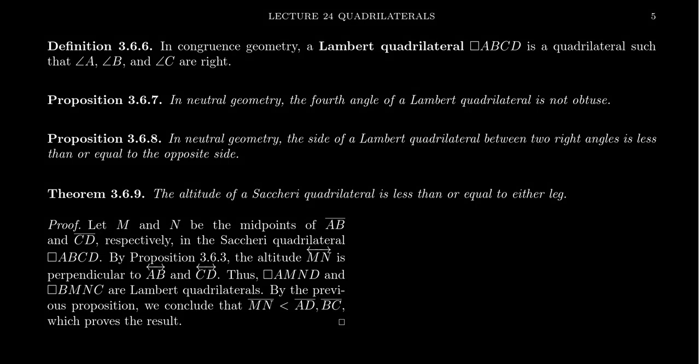In the previous video for lecture 24, we introduced the notion of a Saccheri quadrilateral and then proved some congruence statements and some measure statements about Saccheri quadrilaterals. We then referenced how they relate to the right angle hypothesis, also known as the Euclidean parallel postulate, the acute angle hypothesis, also known as the hyperbolic parallel postulate, and the obtuse angle hypothesis, also known as the elliptic parallel postulate.